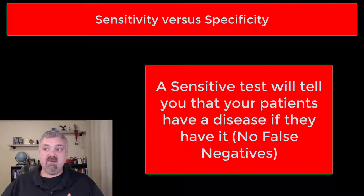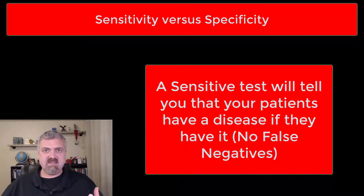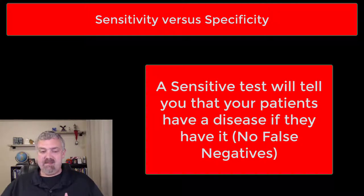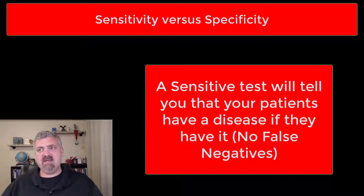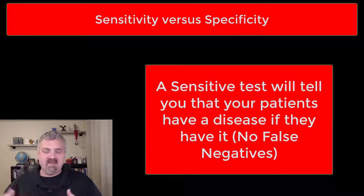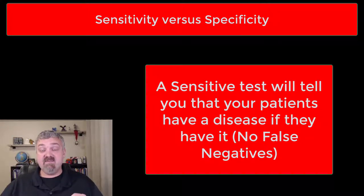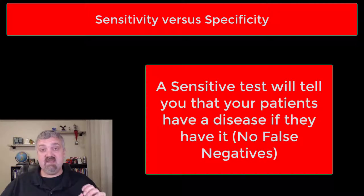A good example would be rheumatoid arthritis. Some of these autoimmune disease tests are not very sensitive. People could have raging cases of rheumatoid arthritis and maybe only have a 70% chance that some of these antibody tests would actually say that they have the disease. So that's a test that's not very sensitive — if a test is sensitive, there won't be false negatives.